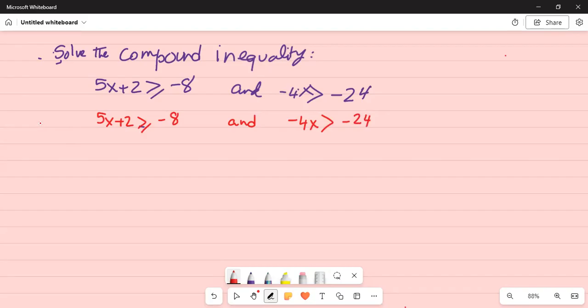For the first inequality, we will subtract 2 on both sides. So 5x is greater than or equal to minus 8 minus 2. Both are negative, add them together to get minus 10. Then divide by 5 because 5 times x, the opposite is division. We want to separate and solve for the unknown variable x. So x is greater than or equal to minus 2.